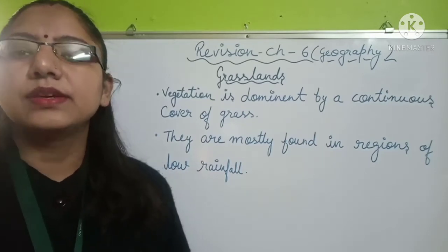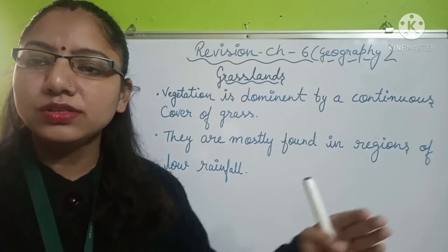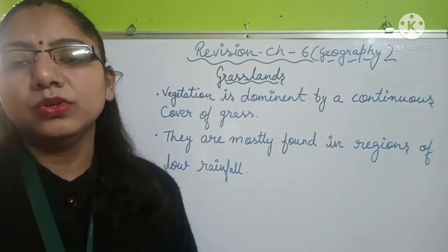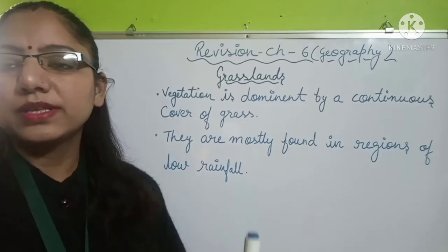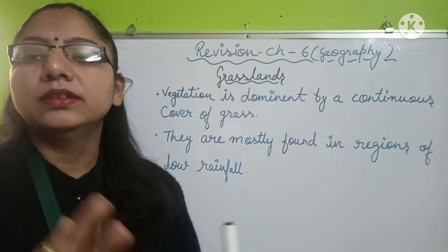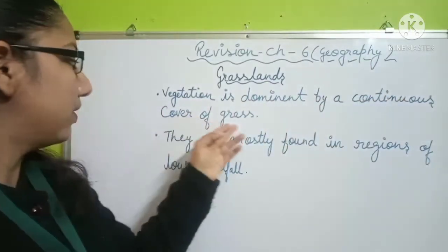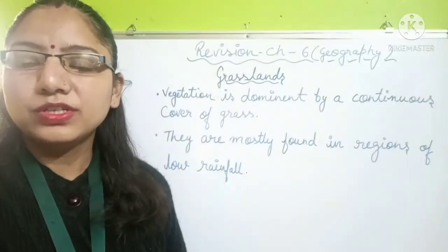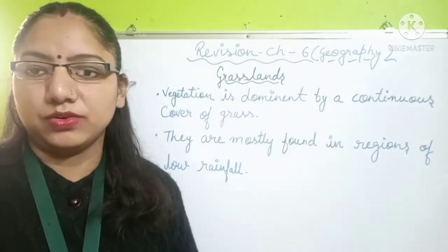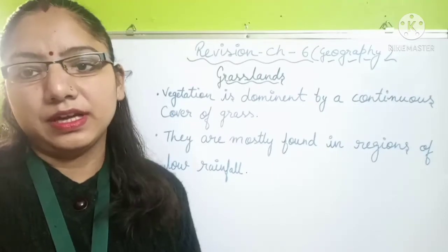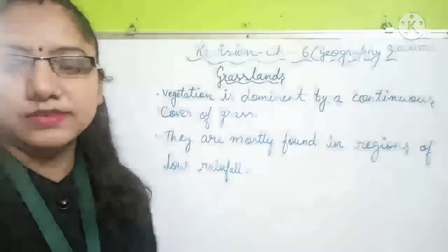First, grasslands. The vegetation of grasslands is generally found in areas where a continuous cover of grass exists. In Uttarakhand we call it 'bugyal.' These are also known as pastures for animals. The vegetation is dominated by a continuous cover of grass due to the lack of water. High growth of vegetation is not there, so forests are absent and grass grows in that area.